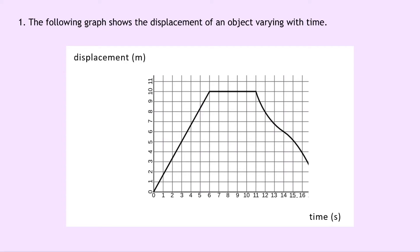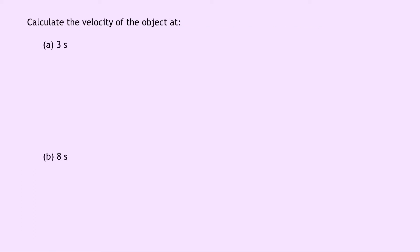Question 1 says that the following graph shows the displacement of an object varying with time. So we have displacement in meters against time in seconds, and you'll see that it follows a linear relationship, then a constant horizontal relationship, and then some sort of weird wavy curve.